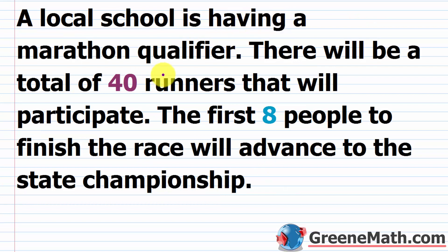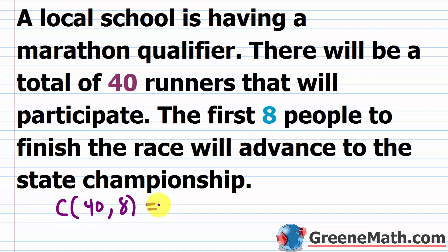A local high school marathon qualifier has 40 runners, and the first eight to finish advance to the state championship. Repetition isn't allowed, and the order doesn't matter for the result — it doesn't matter if you finish first or seventh, as long as you're in the top eight. So we use a combination: C(40, 8), which gives 76,904,685.